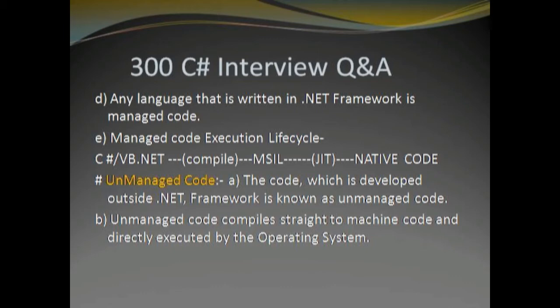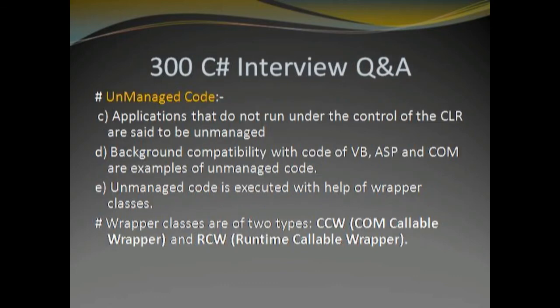Unmanaged code: code which is developed outside the .NET framework is known as unmanaged code. Unmanaged code compiles straight to machine code and is directly executed by the operating system. Applications that do not run under the control of the CLR are said to be unmanaged code. Backward compatibility with code of VB, ASP, and COMs are examples of unmanaged code.